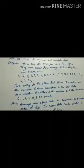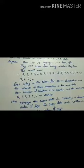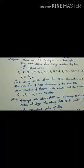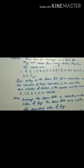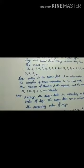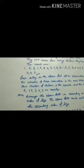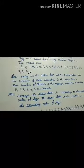Each entry in the above list is an observation. The collection of these observations is the raw data, and the number of children is the variable. The numbers 0, 1, 2, 3, 4, 5 are variates.